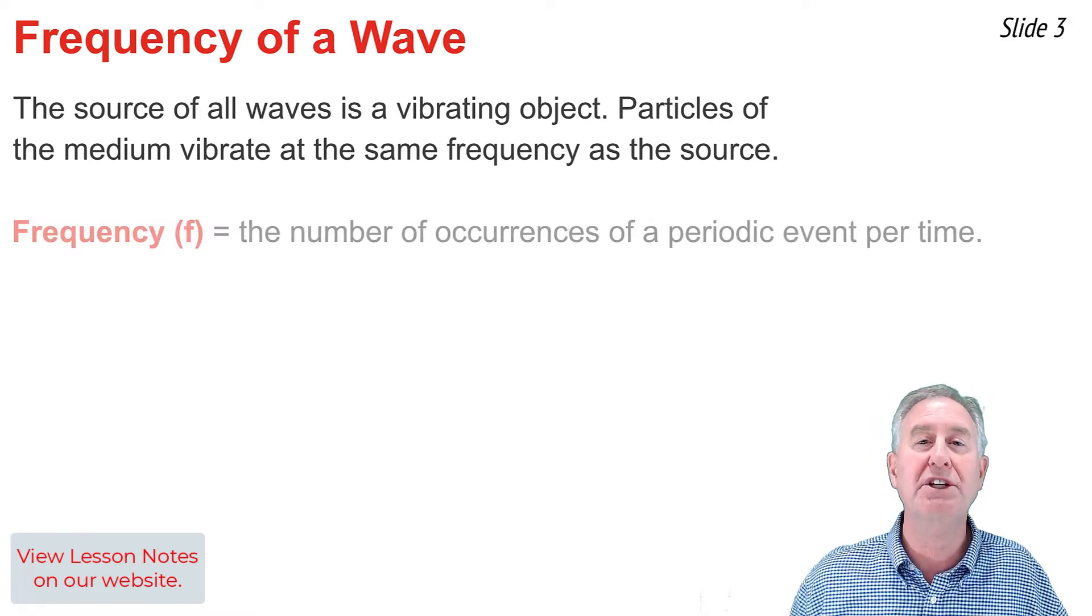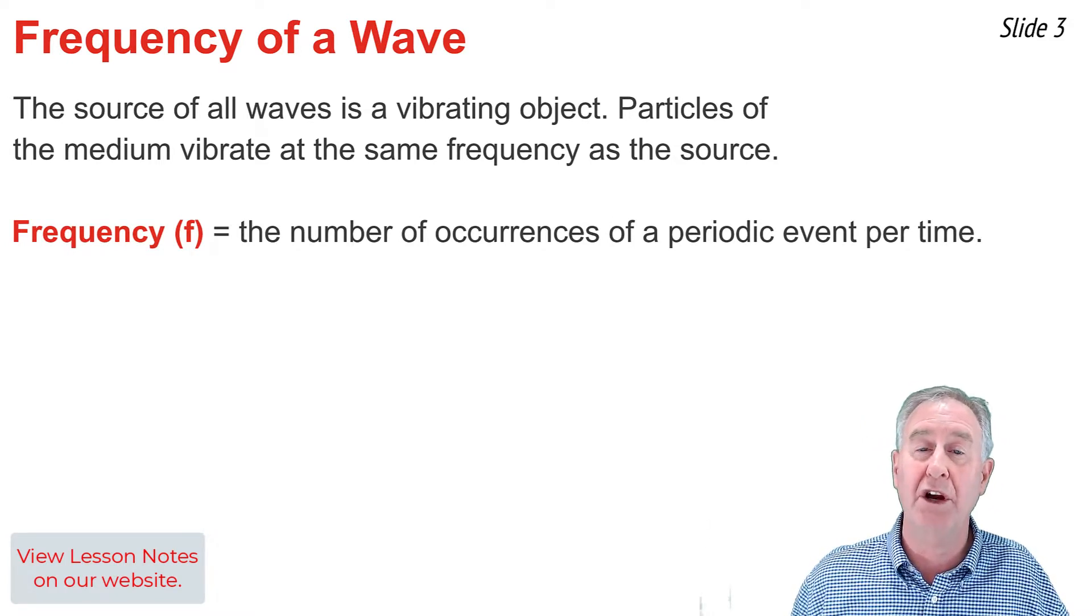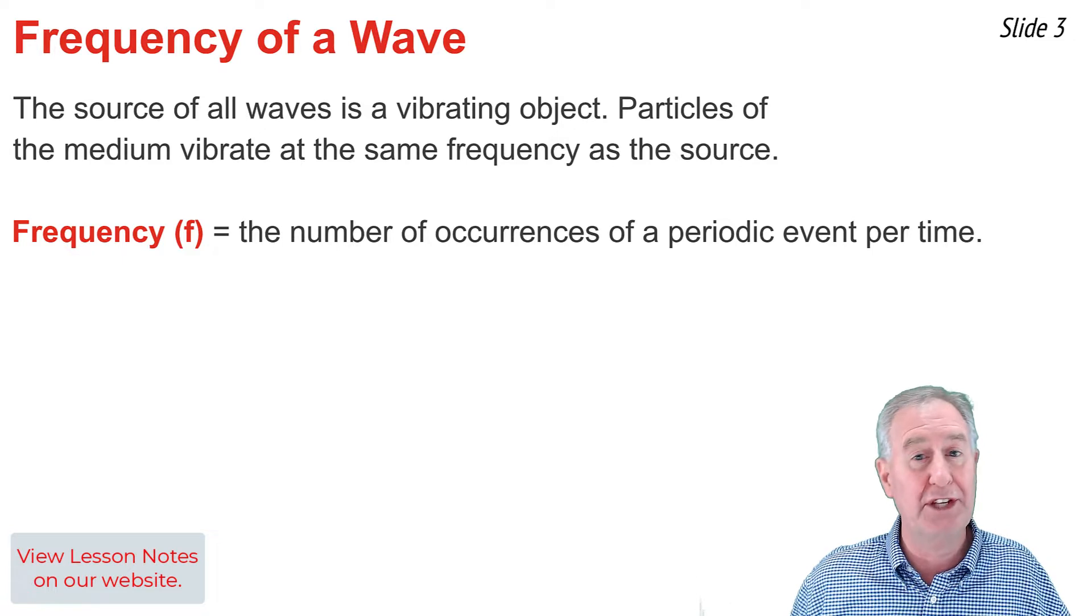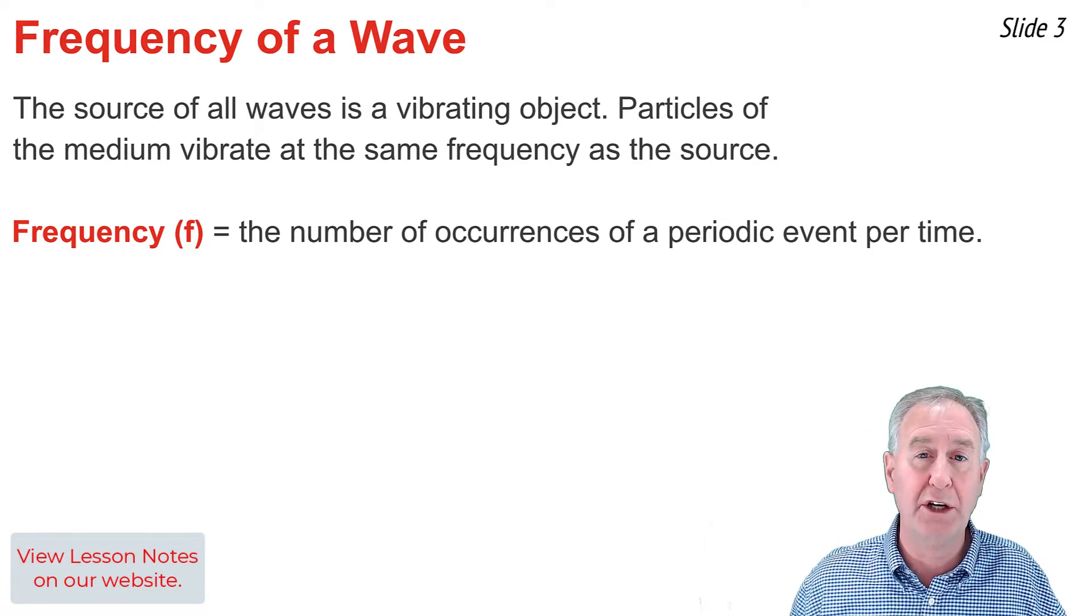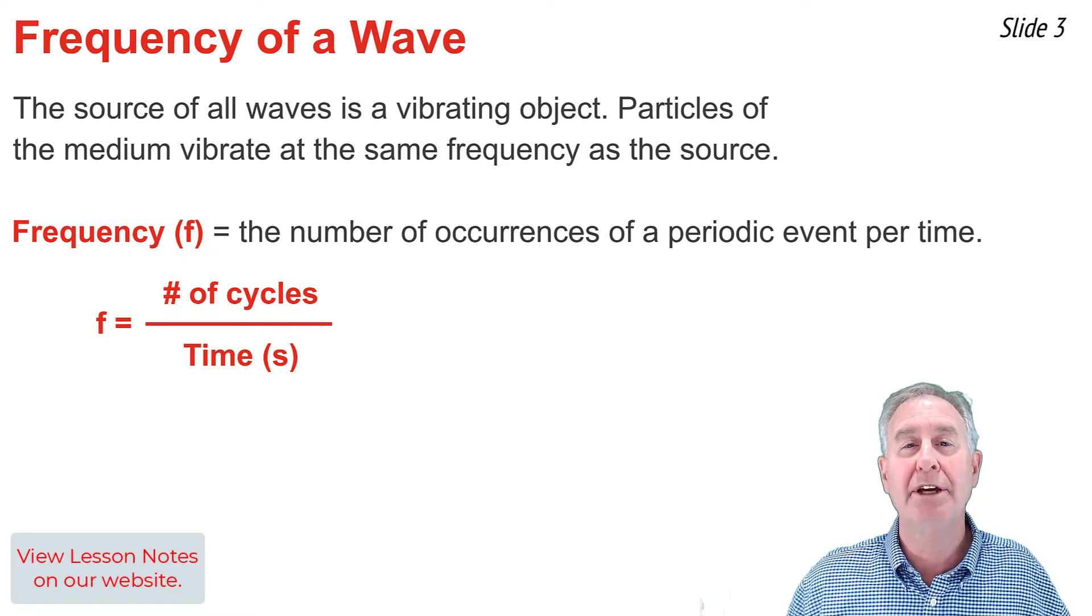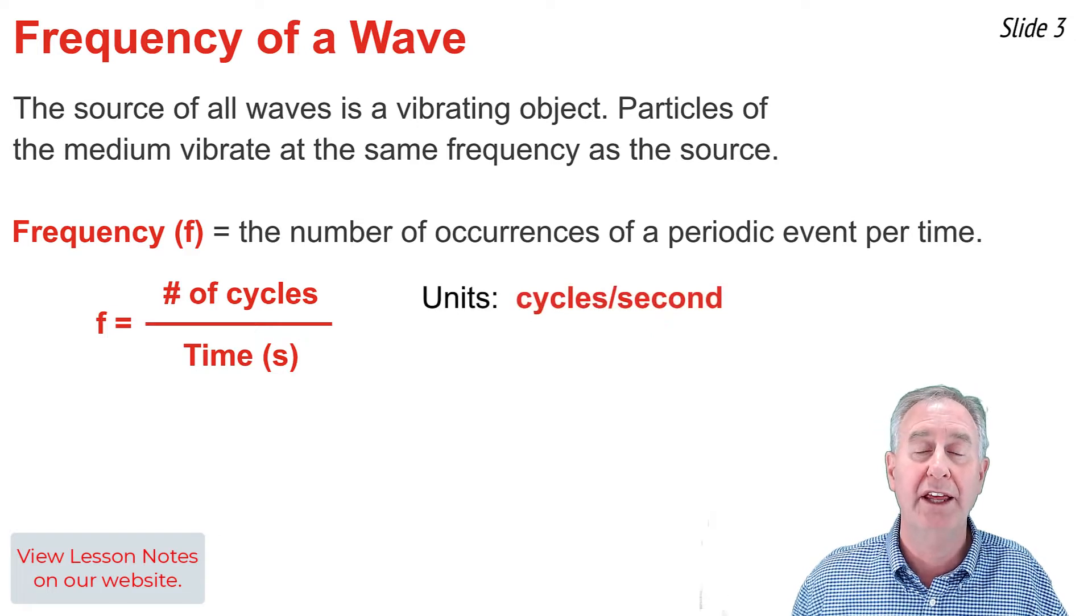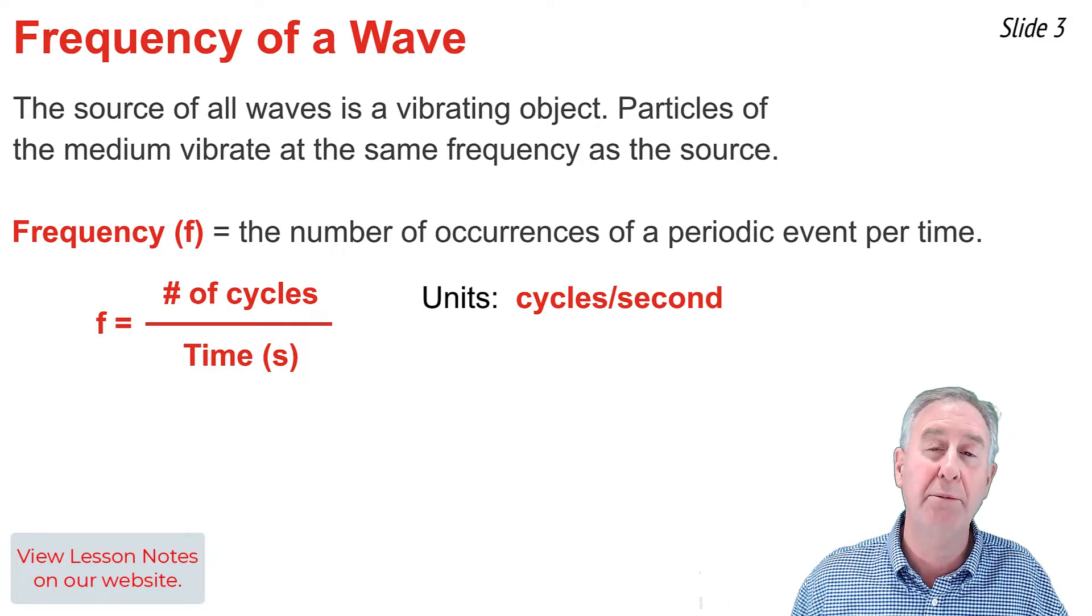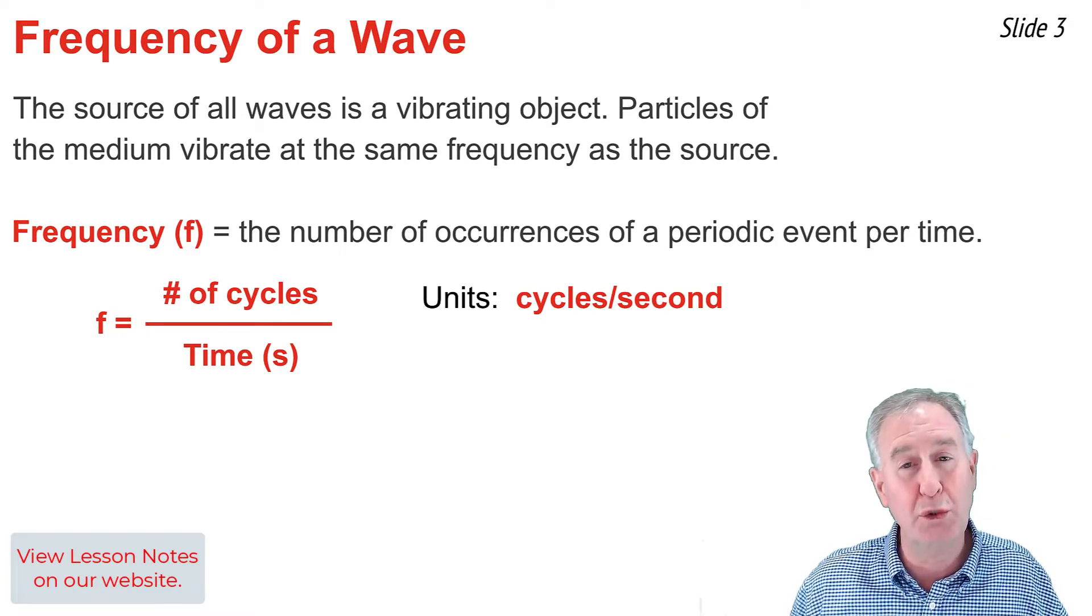When used in this way, frequency describes the number of occurrences of a periodic event per unit of time. The events for waves are the back and forth vibrational cycles of the particles of the medium. Because the event is a cycle, we calculate the frequency of a wave by taking the number of cycles that occur in some amount of time and dividing those number of cycles by that amount of time. Because the time is usually in units of seconds, the frequency has units of cycles per second. Another way to say cycles per second in physics class is to use the term hertz, abbreviated Hz. The coils of the slinky I was vibrating had a frequency of two hertz.